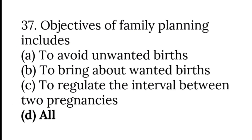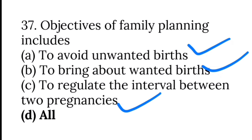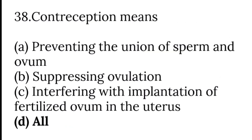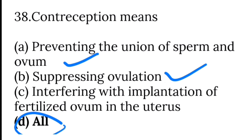Objectives of family planning include avoiding unwanted births, bringing about wanted pregnancies, and regulating the interval between two pregnancies — so the answer is all. Contraception means preventing the union of sperm and ovum, suppressing ovulation, and interfering with implantation of the fertilized ovum in the uterus — answer is all of the above.